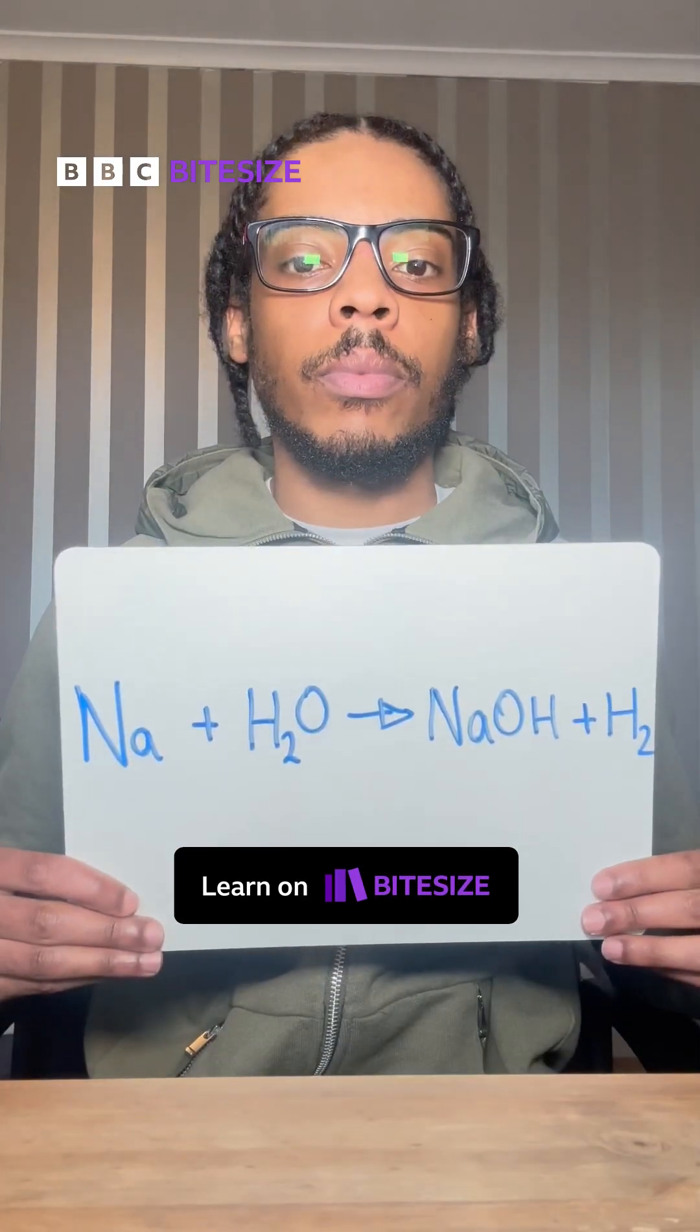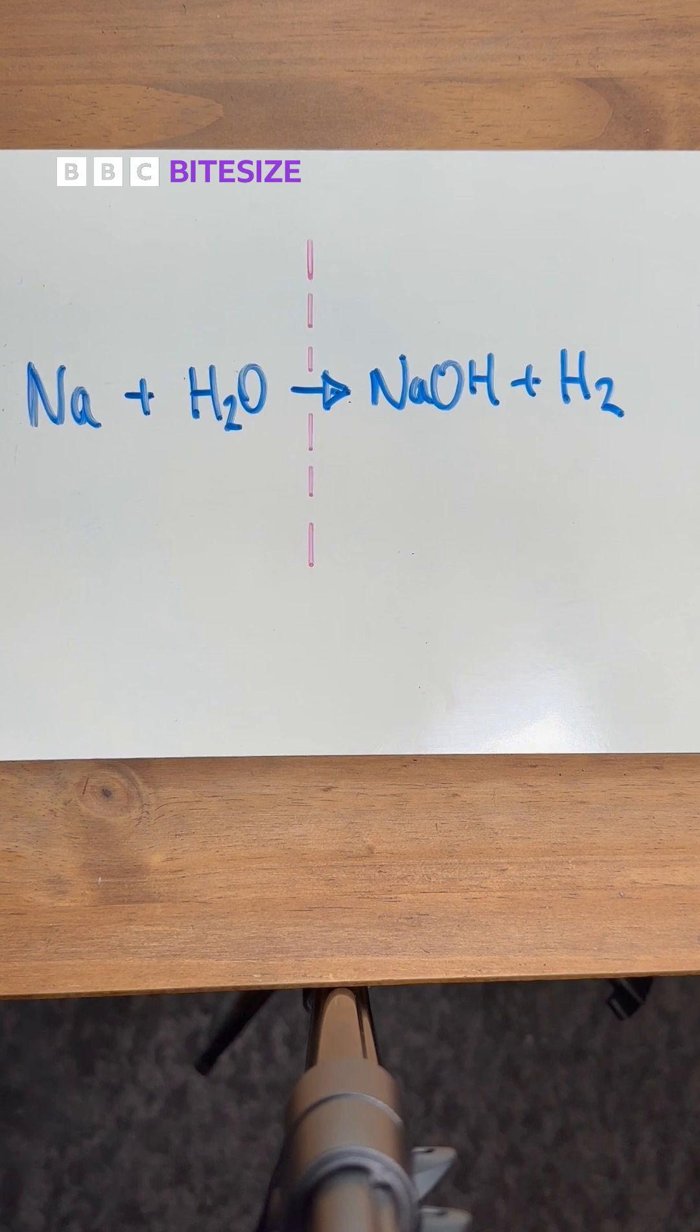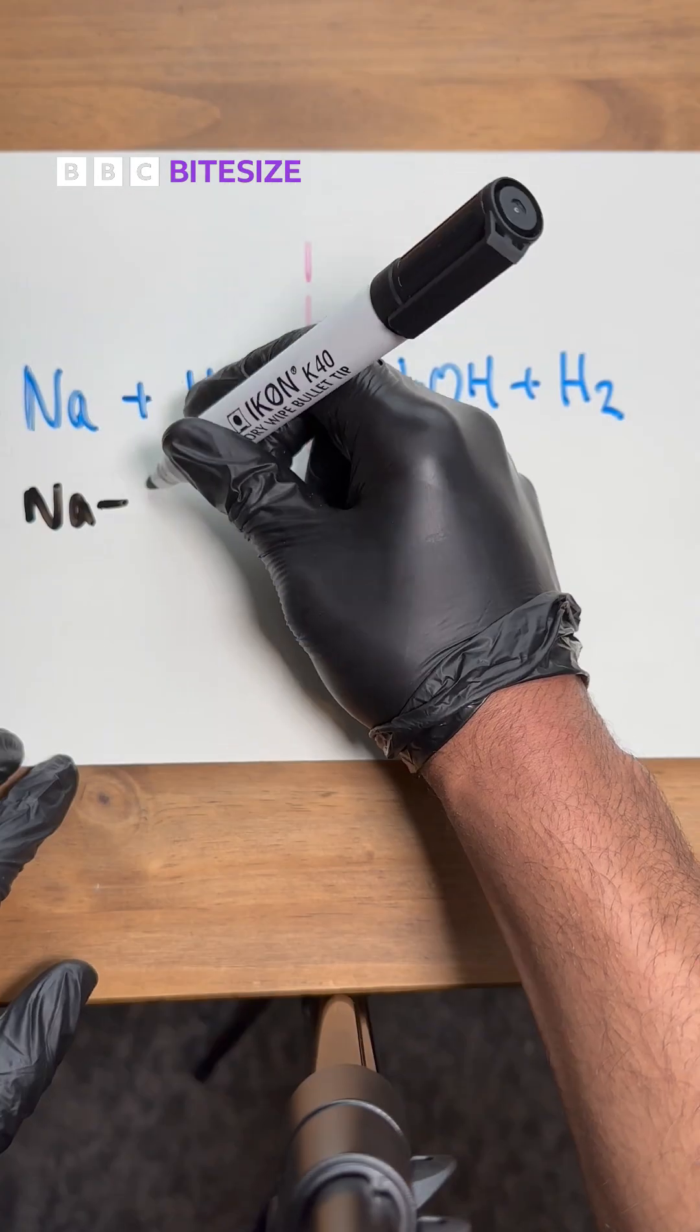All right, sodium plus water, let's balance it. So first we have to split in the middle and count how many of each atom is on each side. On the left we have one sodium and on the right we've got one sodium.